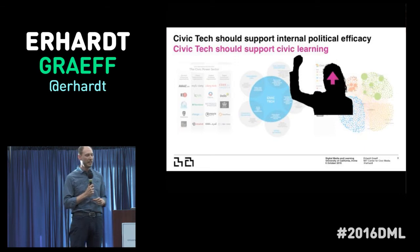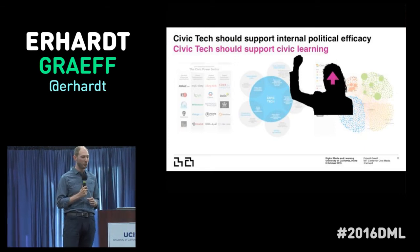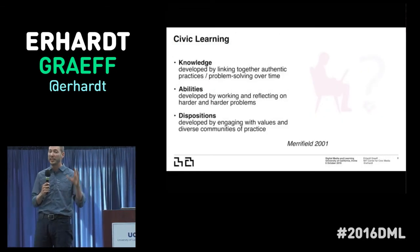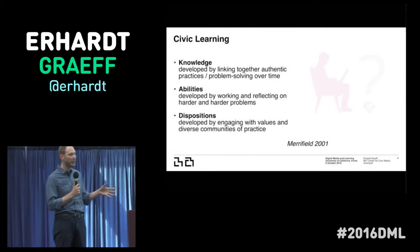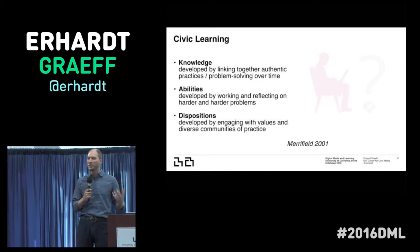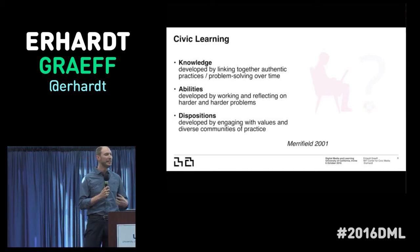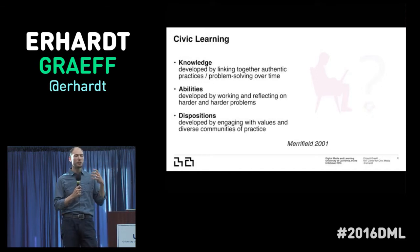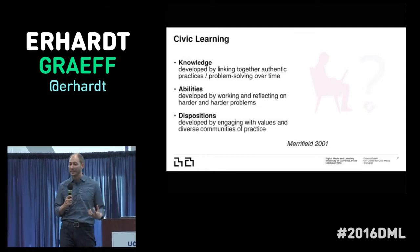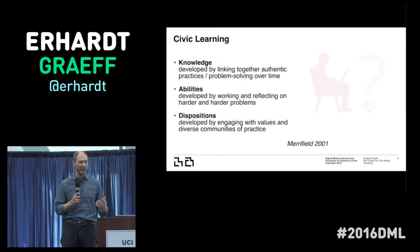That's often what we talk about in this conference, and what does it mean to be looking at civic learning? Let's give a quick definition. I like Juliette Merrifield's framework. She breaks it down into knowledge, abilities, and dispositions — a lot of what we've looked at in our research as a community. It's about collaboration, it's about reflexivity, but it's also about engaging with values and engaging in diverse communities of practice in a way that supports our dispositions toward civic action.